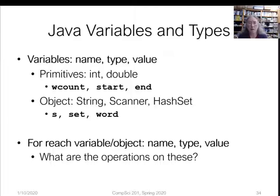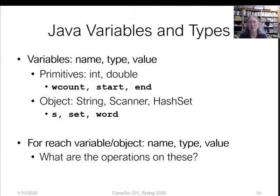I want to talk about Java variables and types. Java has two different types of variables. First are primitives — very simple, like int and double. In that code, wCount was an int, and start and end were doubles keeping track of time. You can also create objects in Java. We had several: String (the variable 'word'), Scanner (the variable 's'), and HashSet (the variable 'set'). We'll learn how to create and manipulate objects — they're much more powerful than primitives.